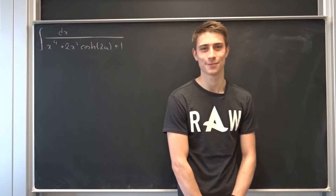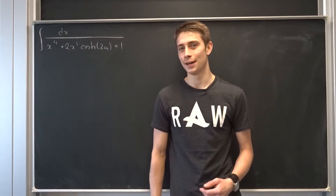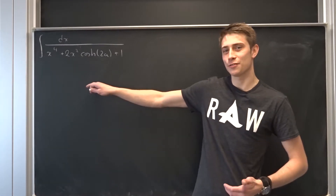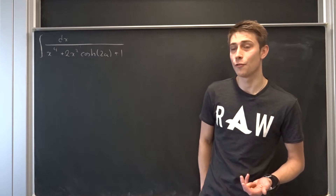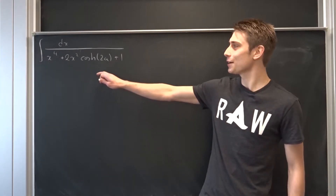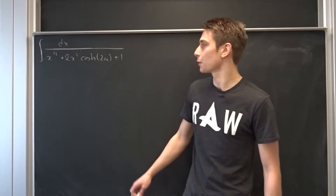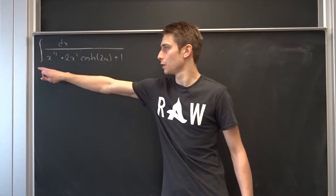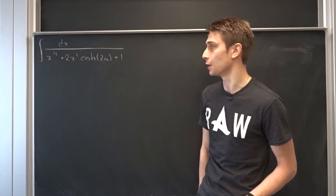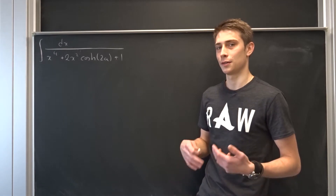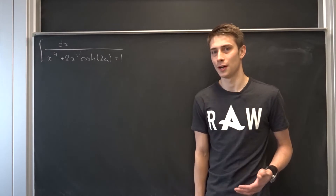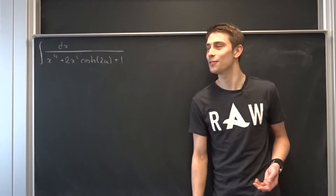Good morning fellow mathematicians. Welcome back to another video. Today we are going to take a look at this integral, and it should look kind of familiar if you watched my 1 over x to the fourth power plus 1 integral video, because that's nearly the same integral, but we are going to solve the indefinite version and with a hyperbolic cosine in there. It's kind of easy, not too hard, but it looks pretty hard so I guess I'm going to solve it.